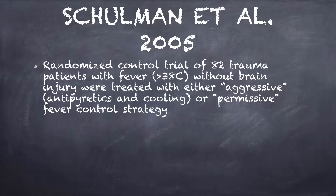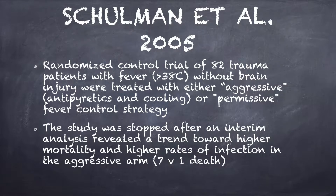Into the data. Schulman et al., 2005, did a randomized controlled trial of 82 trauma patients with fever above 38 degrees Celsius without brain injury, who were treated with either aggressive antipyretics and cooling or a permissive fever control strategy. This study was actually stopped after an interim analysis revealed a trend towards higher mortality and higher rates of infection in the aggressive arm — seven versus one death.